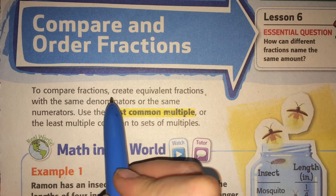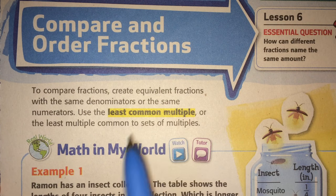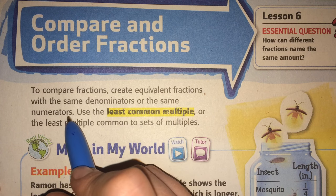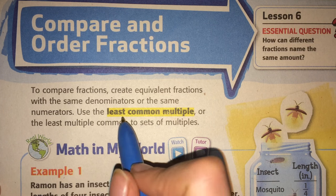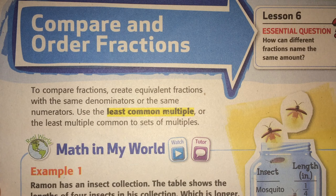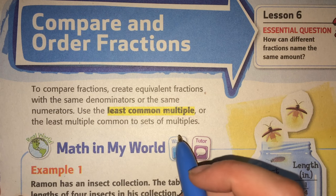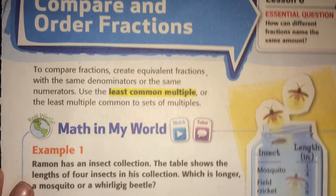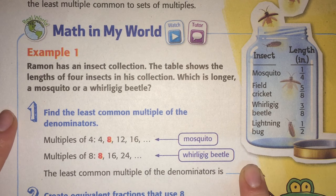To compare fractions, create equivalent fractions with the same denominators or the same numerators. Use the least common multiple or the least multiple common to sets of multiples, and we'll show you what those mean. First, let's look at the example.